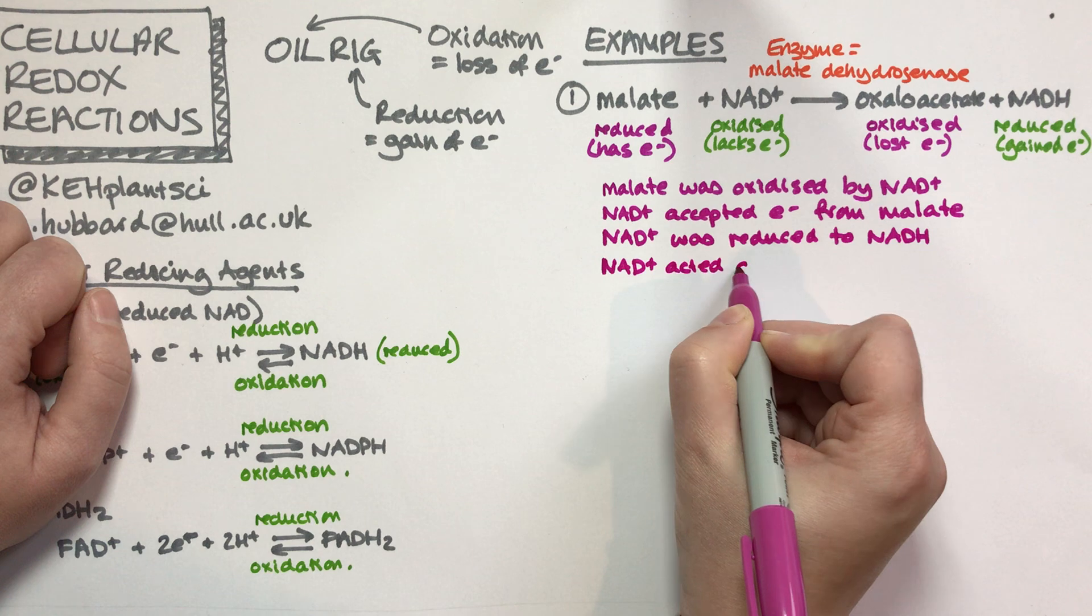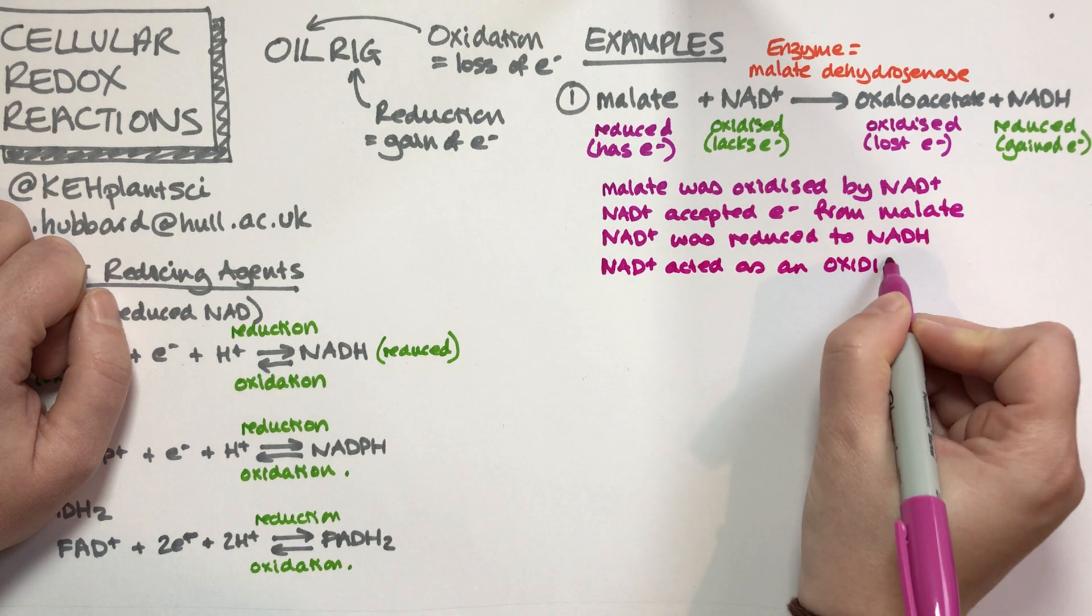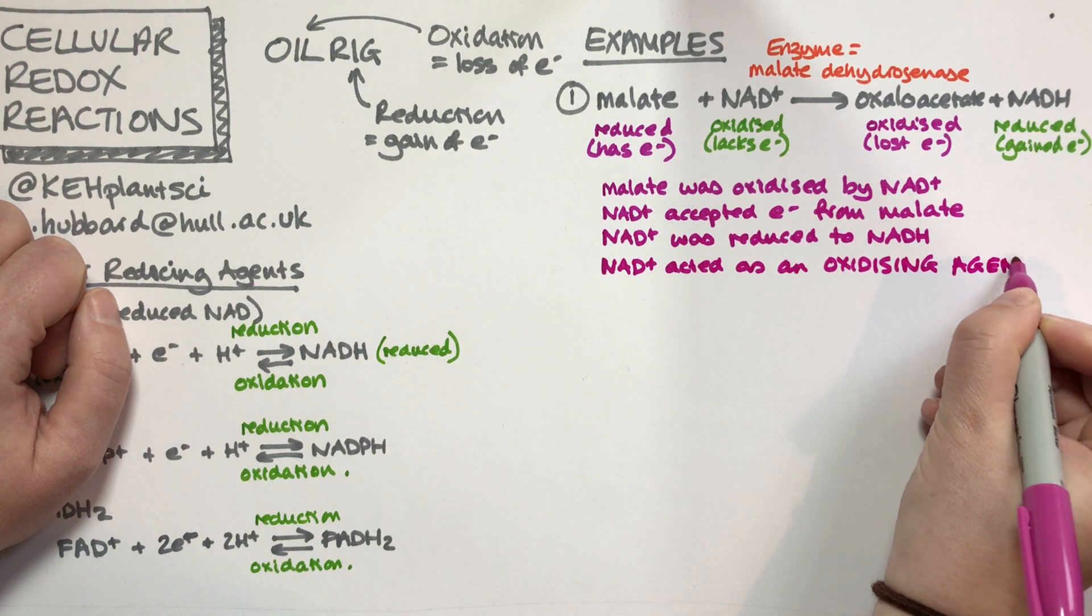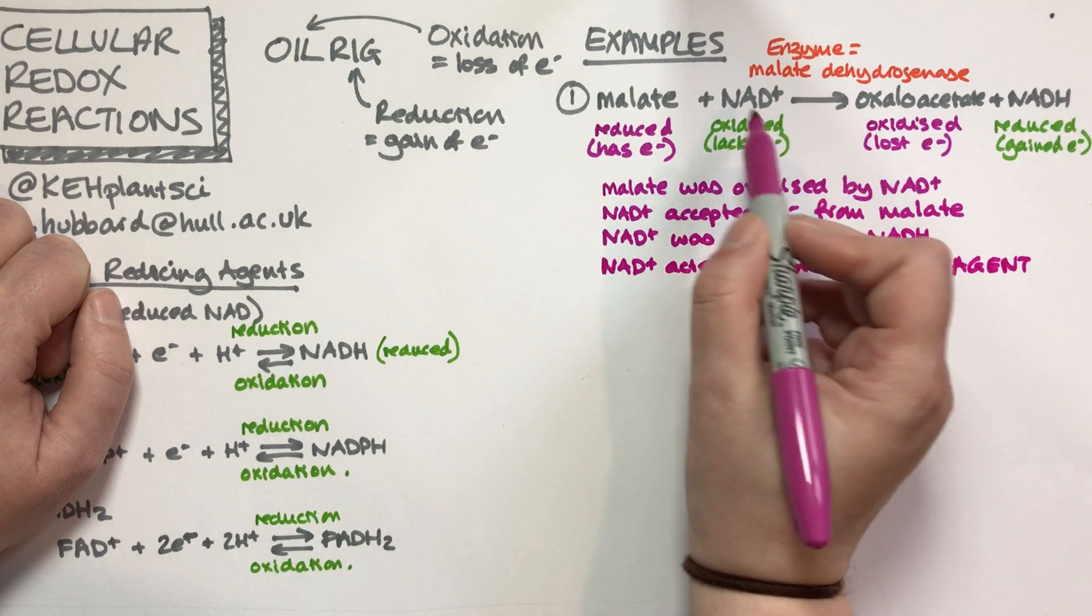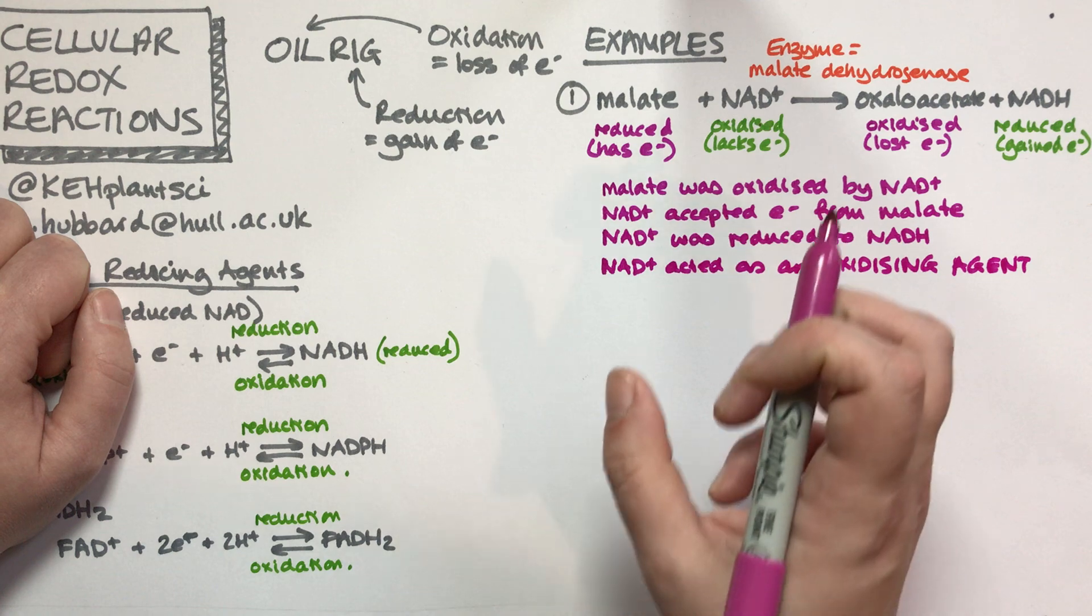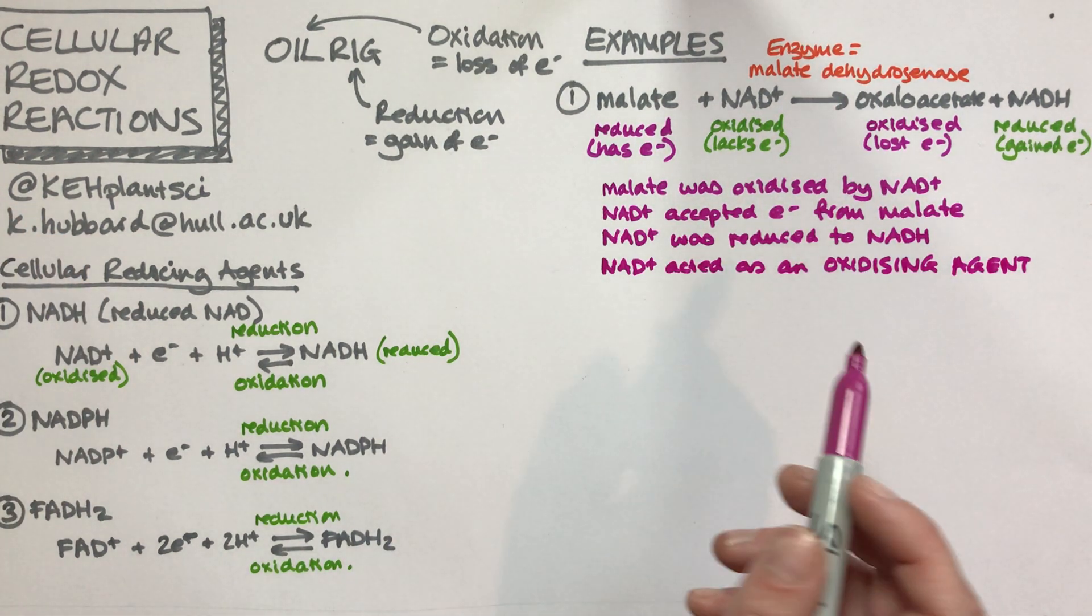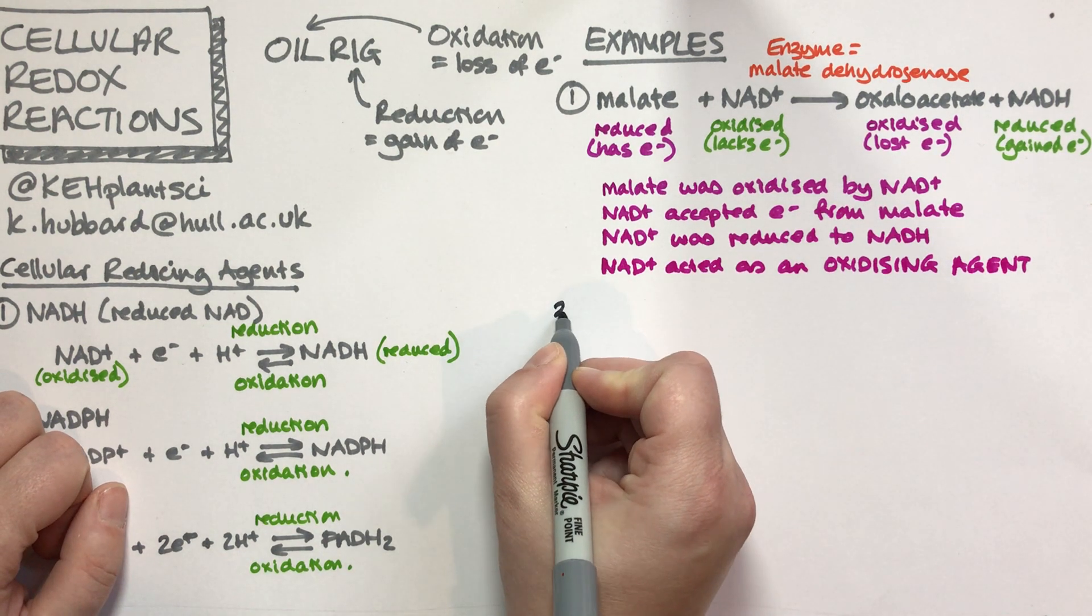Another thing that we sometimes say is that NAD+ acted as an oxidizing agent. Because the malate was oxidized by NAD+, we sometimes refer to NAD+ as an oxidizing agent. It was able to oxidize the malate.